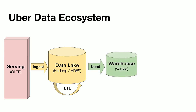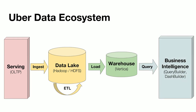Once these modeled data sets are available, we load them into our data warehouse, which is entirely powered by Vertica. We then have a business intelligence layer with internal tools like Query Builder — a UI interface to write queries and look at results — and Dash Builder, a dashboard building and report management tool. These are all tools we have built within Uber that talk to Vertica and run SQL queries to power whatever dashboards and reports they are supporting. This is what the data ecosystem looks like at Uber.